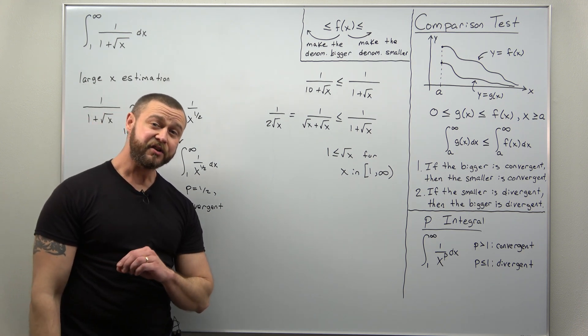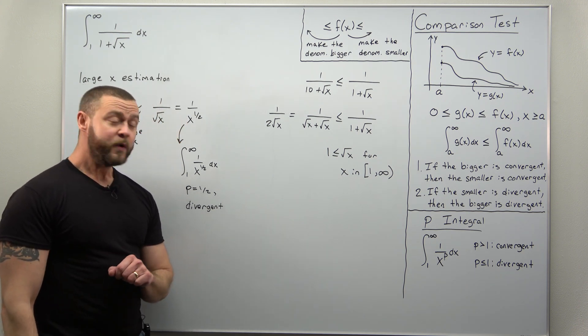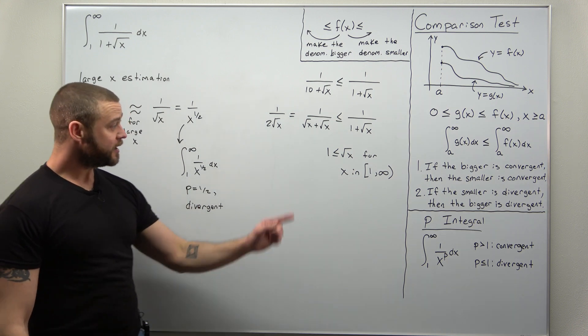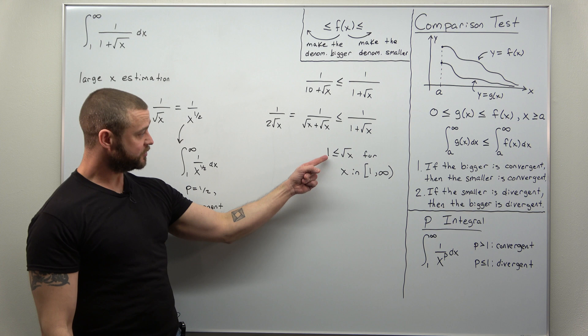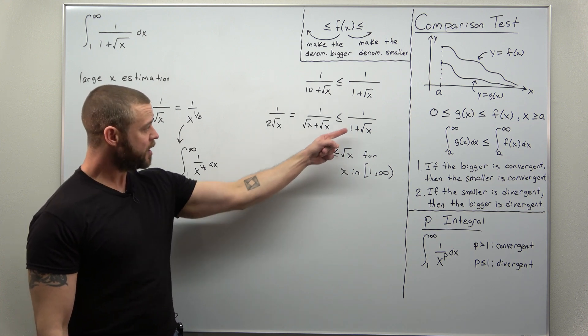And that is the tricky part. We just figured out the appropriate term to make the one bigger by. We're using that fact that square root of x is bigger than one.